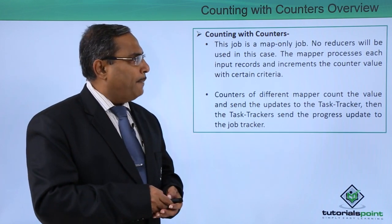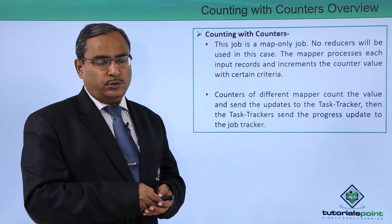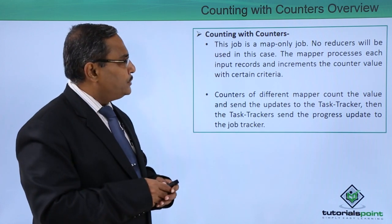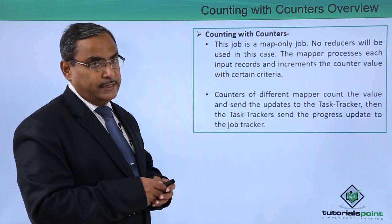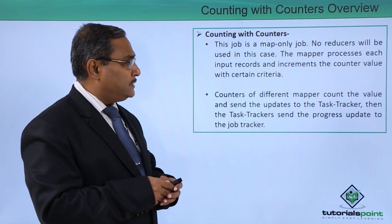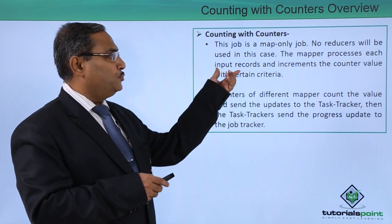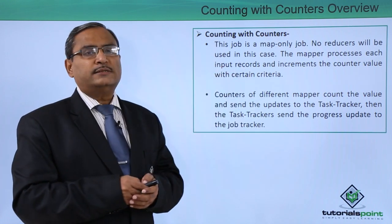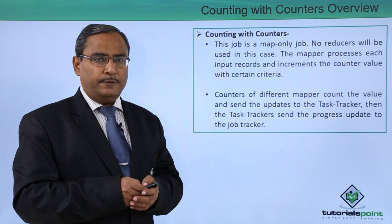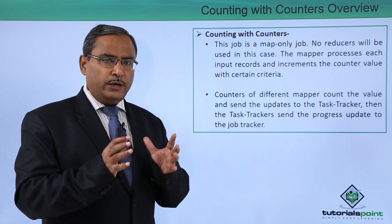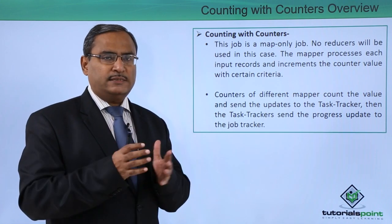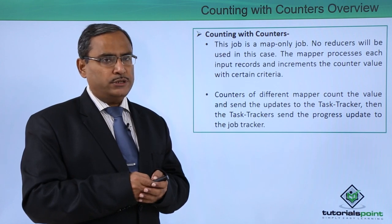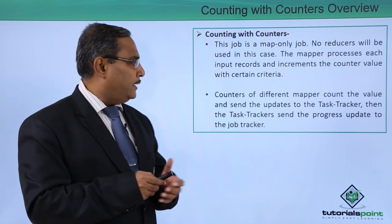This job is a map job only — it has only the map job and no reducer will be used. The mapper processes each input record and increments the counter value with certain criteria. For similar key values, it will just go on increasing the counters accordingly.